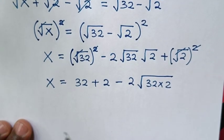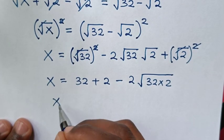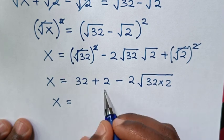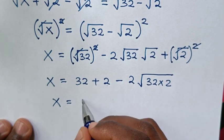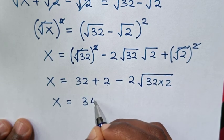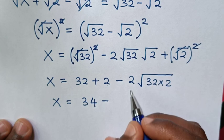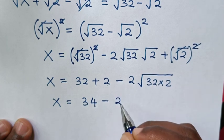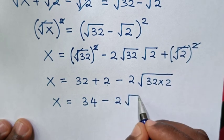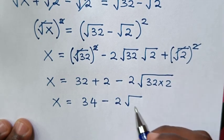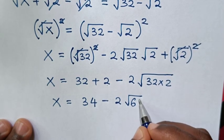Then in the next step, x is equal to 32 plus 2 is 34, then minus 2, then square root of 32 times 2 is square root of 64.